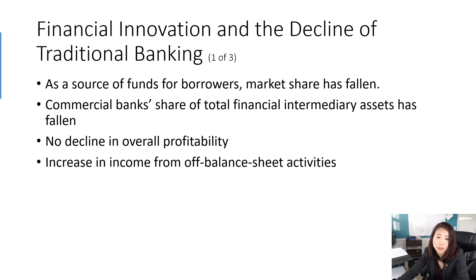After understanding financial innovation, we look at why banks are so worried about profits — specifically, the decline of traditional banking. Traditional borrowing and lending is no longer making a lot of money. The commercial bank's share of total financial intermediary assets has fallen. However, overall profitability has not declined because of financial innovation and the increase in income from off-balance-sheet activities. Banks no longer rely solely on borrowing and lending — they rely on securitization, sweep accounts, and money market mutual funds.